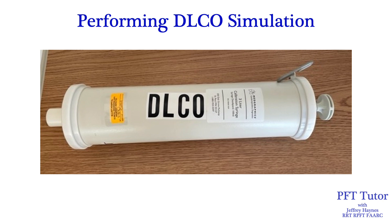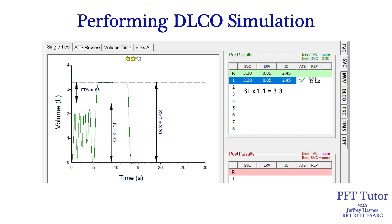Ideally, the syringe used for DLCO simulation will not have a hose or a filter attached, because that will add dead space and you'll need to account for that amount of dead space. Because you are performing DLCO simulation in patient testing mode, most software on the market is going to require you to perform a vital capacity first, so the acceptability of the inspired volume can be judged. During DLCO, patients should inhale at least 90% or greater of their largest vital capacity. You can do this as a forced vital capacity or a slow vital capacity.